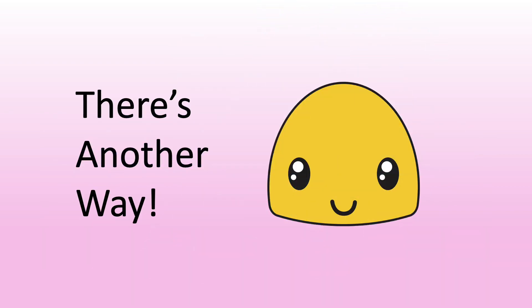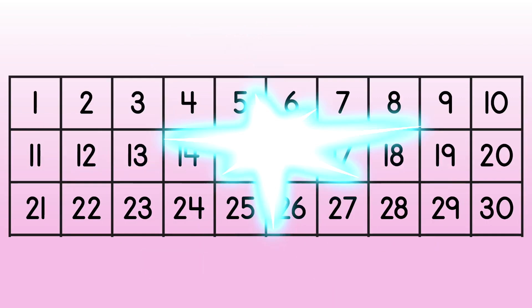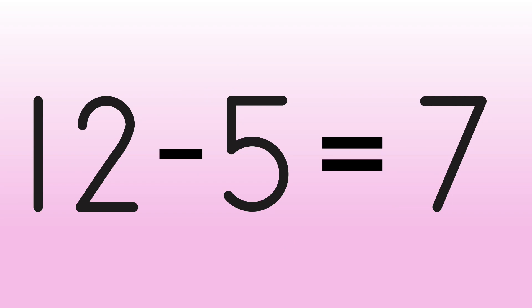We can solve that subtraction sentence another way. 12 minus 5 equals blank. This time, start at 5 and count up to 12. The number of steps is our answer. Find 5. Count up to 12. 1, 2, 3, 4, 5, 6, 7. We counted up 7. 12 minus 5 equals 7.